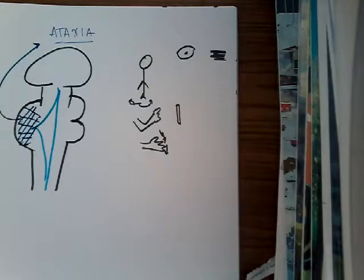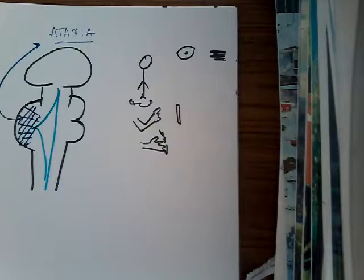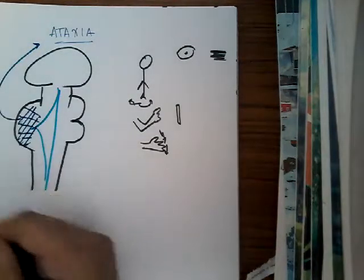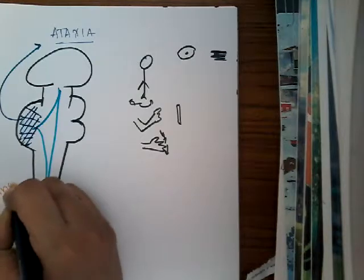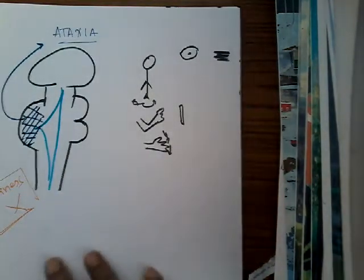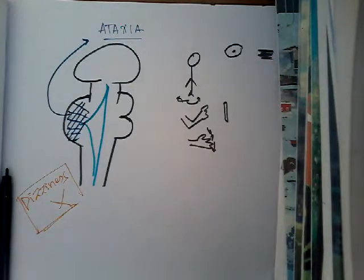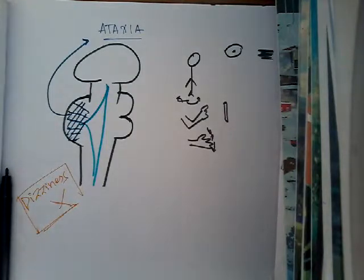Gait impairment is also seen in Labyrinthine Disease. In our body, the Cerebellum is part of the central nervous system which maintains balance. There is also one part peripherally located — that is the Labyrinthine system, the inner ear — which also maintains our balance. Whenever there is a Labyrinthine Disease or inner ear disease, that will have an important symptom which is dizziness. Dizziness is not present in Cerebellar Disease; it is only present in Labyrinthine diseases.